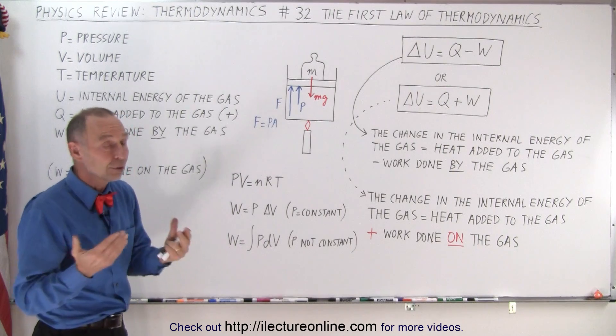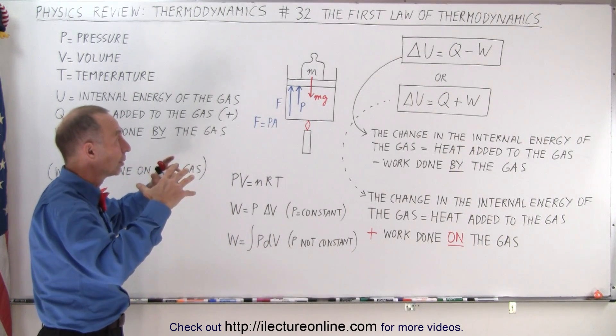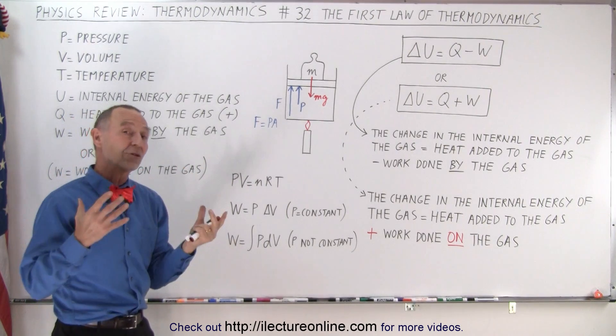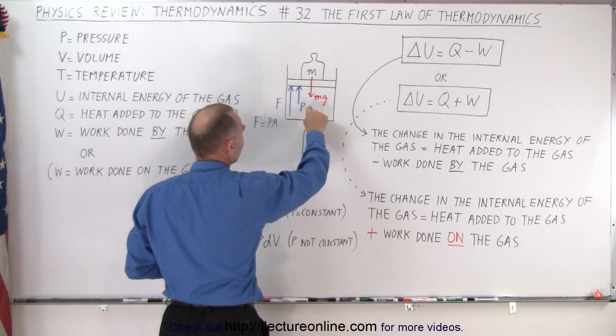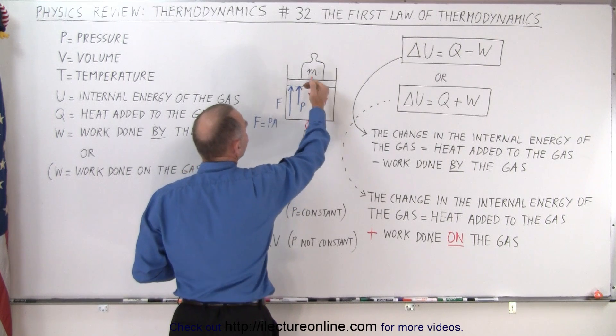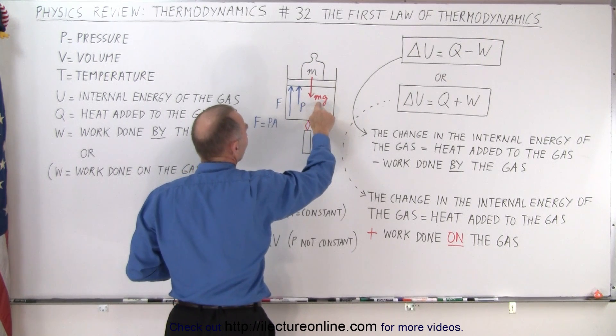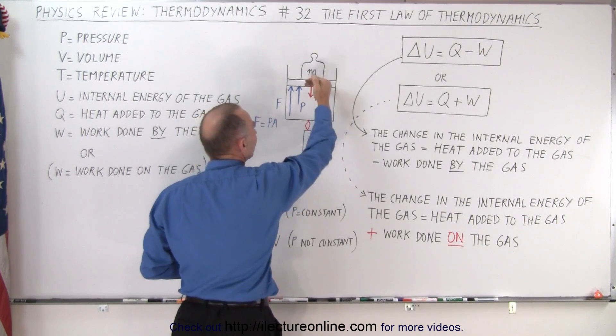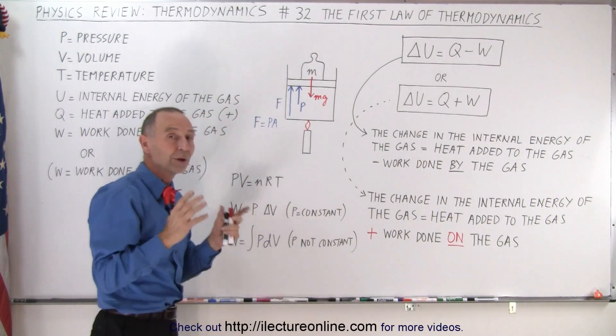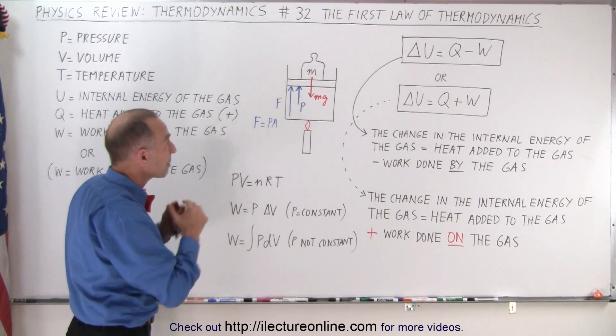So we add heat to the gas. Well, that can result in two things. The temperature can go up, or the pressure can go up, or both can go up. Now in our device here, as the pressure increases, it will push against the piston because the force will be bigger than mg, until the two forces equal again. And so with a device like this, the pressure actually remains constant.